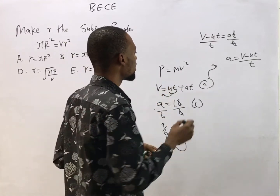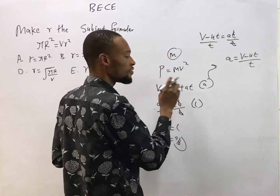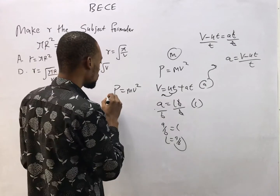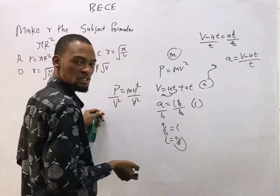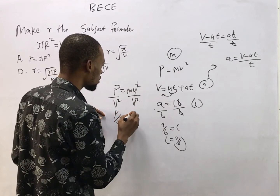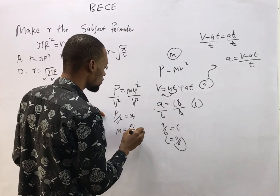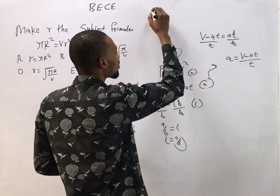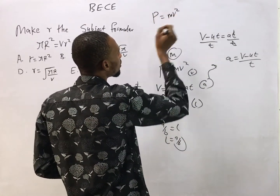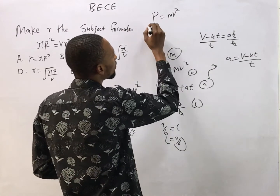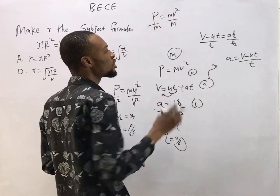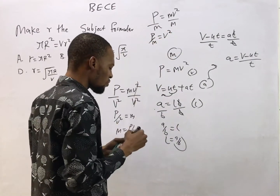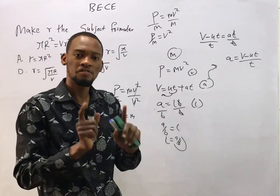Similarly, if we are making v the subject formula in p = mv², I divide both sides by m. m divided by m gives you one, so m cancels, leaving p over m equals v². But we are looking for v and not v², so what to do?